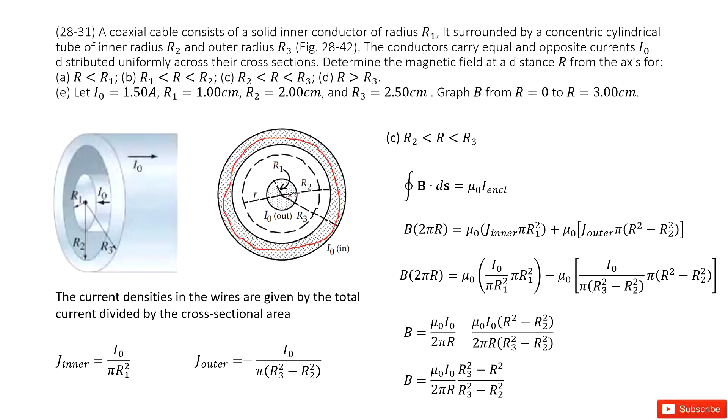This is μ0I using the inner density times πr². Then the outer cable: the current density out times the cross-sectional area, which is r² minus r2². You input the outer part of the current density and reorganize it. You get the answer there.